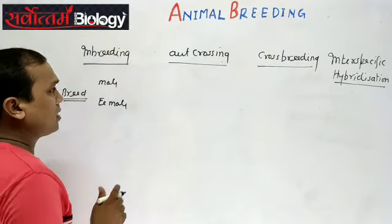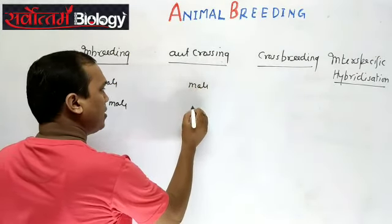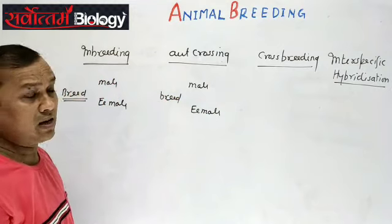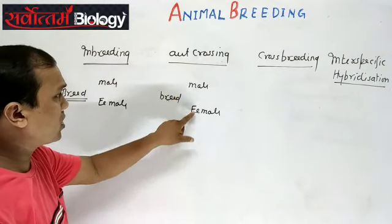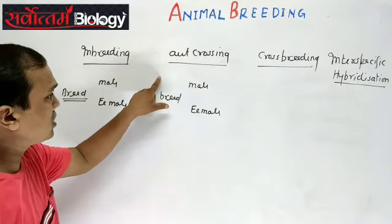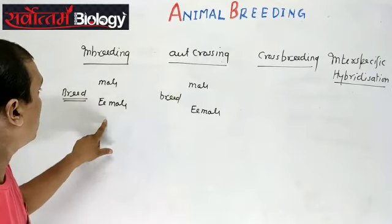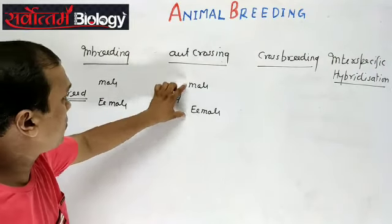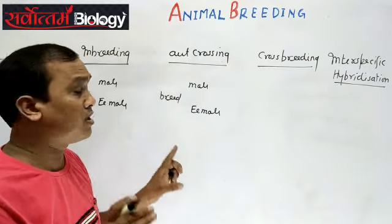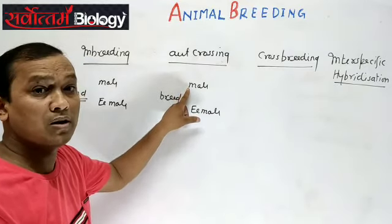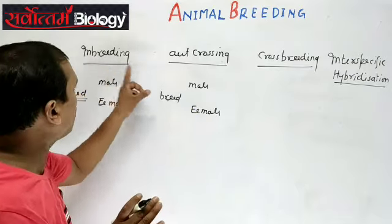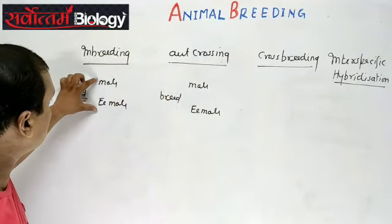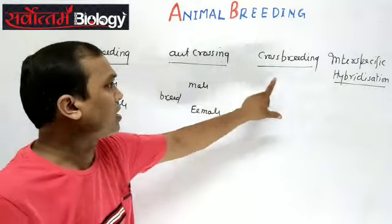In out-crossing, the male and female are also of the same breed, but the difference is that their ancestors are different. The male and female are of the same breed but have unrelated ancestors — there should be no relation for at least the past 4 to 6 generations. That is the basic difference between inbreeding and out-crossing.